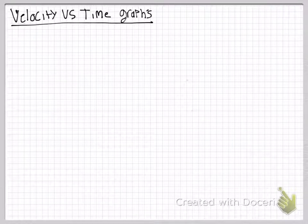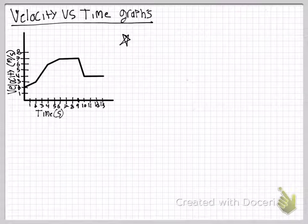This video is about velocity vs. time graphs. Velocity vs. time graphs have velocities on the y-axis measured in meters per second, while time is on the x-axis measured in seconds.